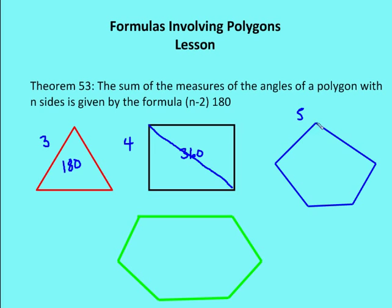Here I have a pentagon. I'm going to create three triangles here — first one triangle, now two triangles, now three triangles, each one with 180 degrees. So the sum of the measures of my pentagon is 540 degrees.